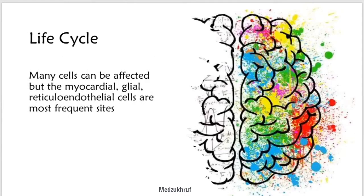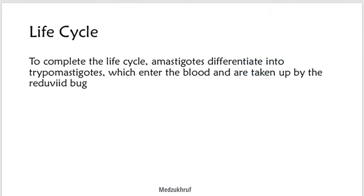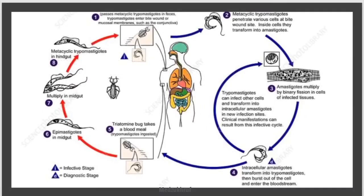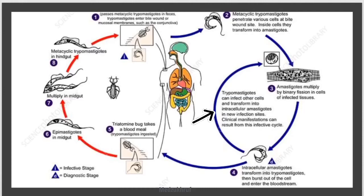In the host, trypomastigotes form non-flagellated amastigotes within host cells. Many cells can be affected, but myocardial, glial, and reticuloendothelial cells are the most frequent sites. To complete the life cycle, amastigotes differentiate back into trypomastigotes which enter the blood and are taken up by the reduviid bug. The amastigotes multiply by binary fission in infected tissues, and the cycle continues — some amastigotes are ingested by the bug when it bites again.